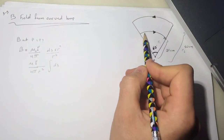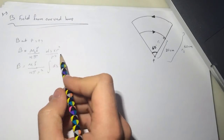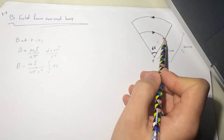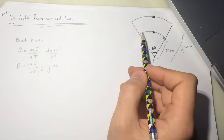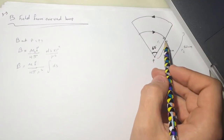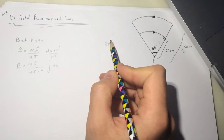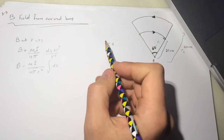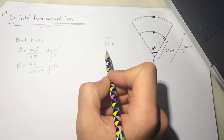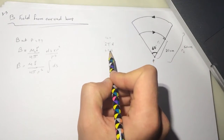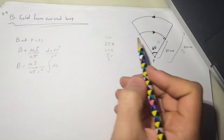So we have uI over 4 pi, and we can take R squared outside the integral, leaving us with the integral of dS. If we summed the whole circle it would be 2 pi R. For 360 degrees that is 2 pi R, but here our angle is 60 degrees.